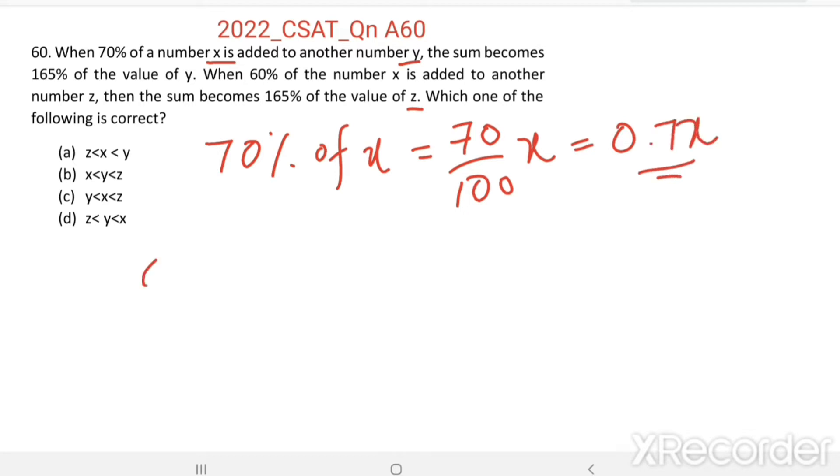So 0.7x is added to another number y. The sum equals 165% of the value of y. So 165% equals 1.65y. This is equation 1.